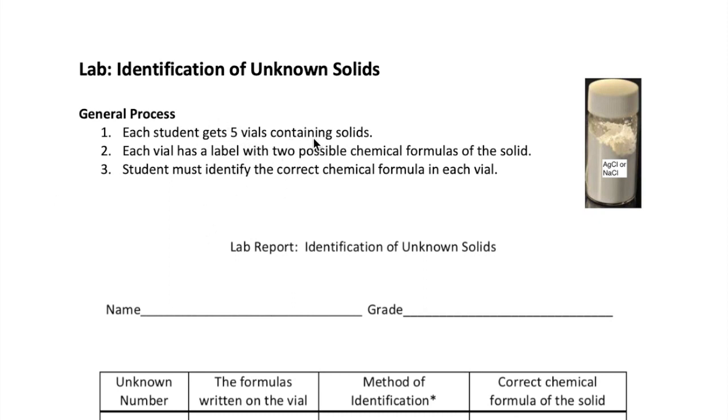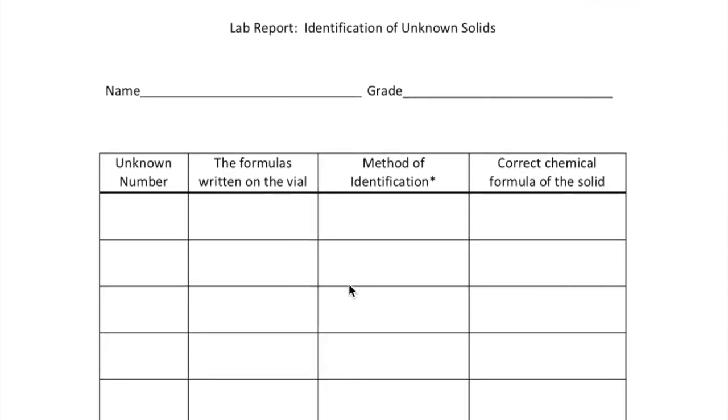Each student will be given five vials containing a solid. On the vial, there will be two chemical formulas. For example, here I show a vial with AgCl or NaCl on the label. Your goal is to determine the identity of the solid in each vial and you have 50 minutes to do so. At the end of the period, you have to turn in your lab report which is shown right here with the correct chemical identity of the solid that you have and the method that you use to identify the unknown.